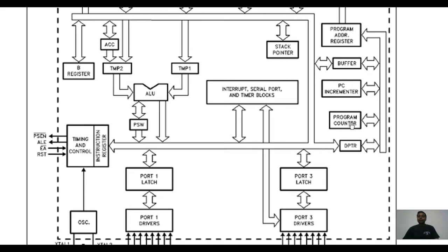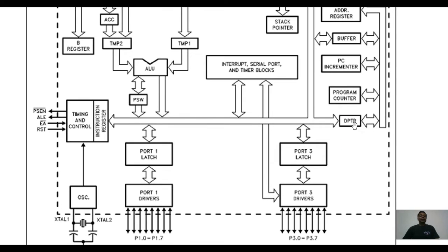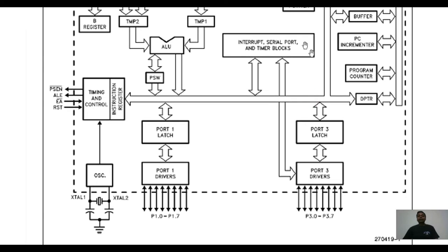The PC incrementer increments the value in the program counter. The program counter keeps track of which instruction is currently being executed by storing the address in ROM of the next instruction to be executed. The program counter is 16 bits, so it can store a 16-bit address. The DPTR, or data pointer, is used when accessing data memory or RAM using indirect addressing mode, and also when accessing external RAM.